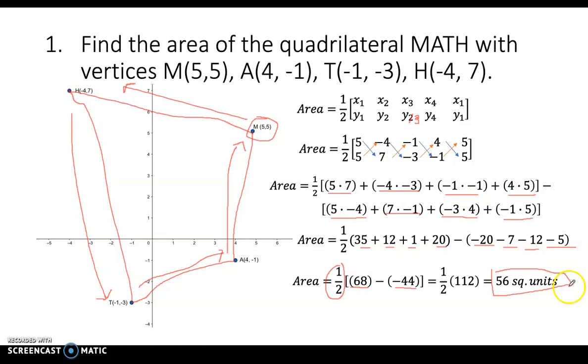All right, so the answer should be 56 square units. Since we're talking about area, our unit must be a square unit. Okay, so this time it's time for you to do some exercises on your own.